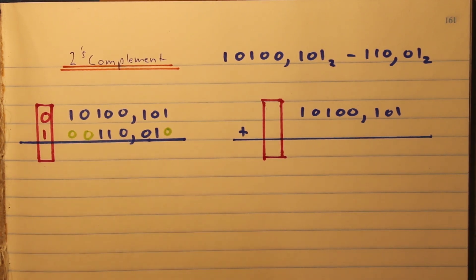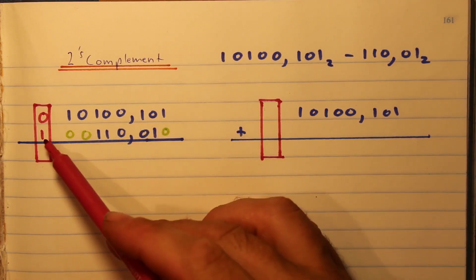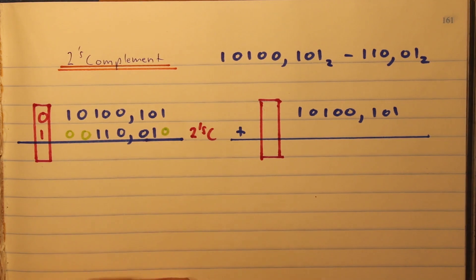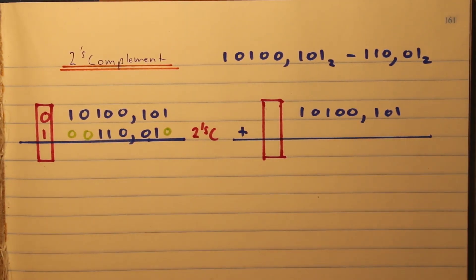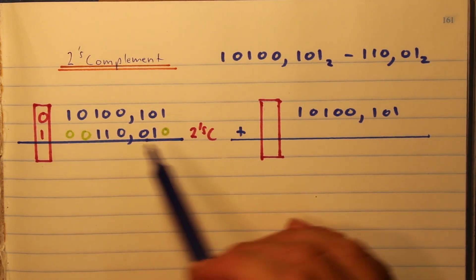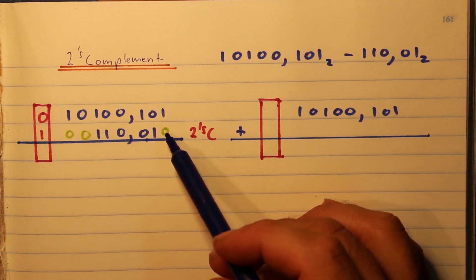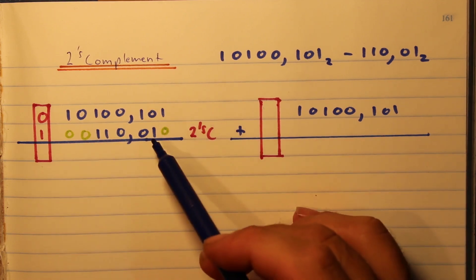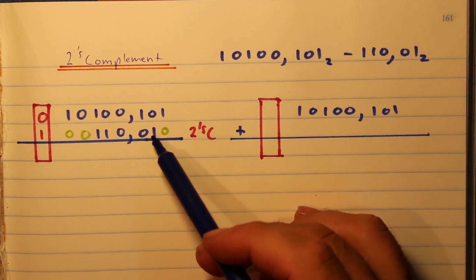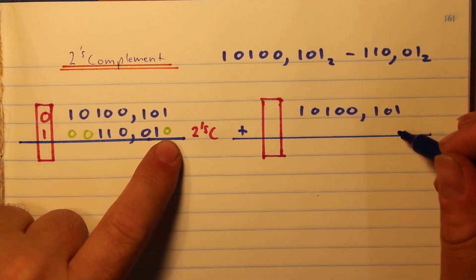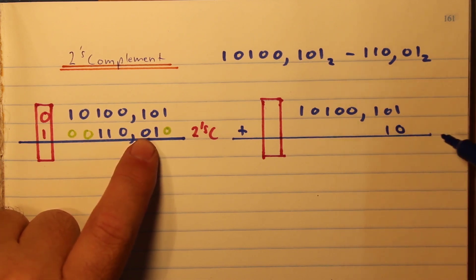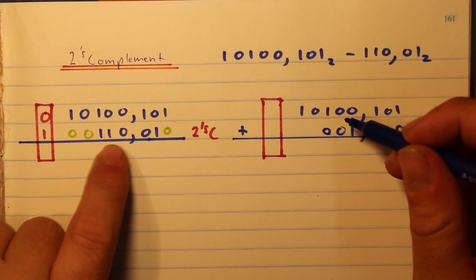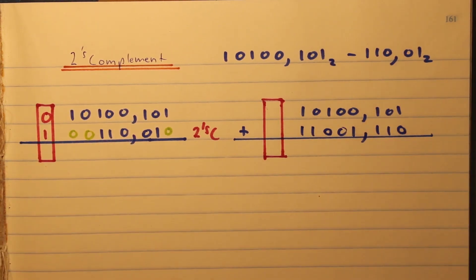Then we're going to complement the negative number at the bottom, but this time using two's complement. How that works is instead of complementing the entire number, we move in this direction and look for the first one. When we find that one, only after that first one do we start complementing the remaining digits. So there's the first one — we write down zero, one, and then start complementing. That zero becomes a one, that zero becomes a one, and those two ones become zeros.